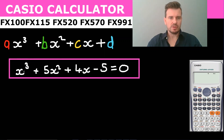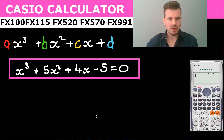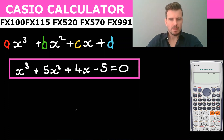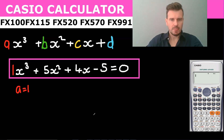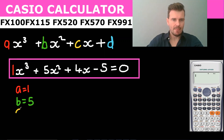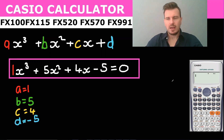So if you're given the equation x³ plus 4x² plus 4x minus 5 equals 0 and you are asked to solve it: your a is equal to 1 because there's a 1 here, your b is equal to 4, your c is equal to 4, and your d is equal to minus 5. And so you could just put that in your calculator.